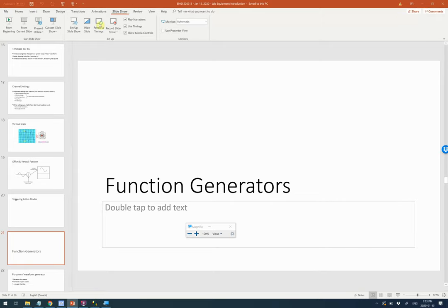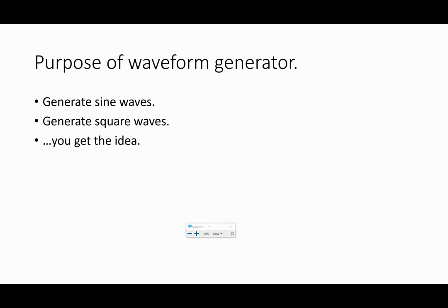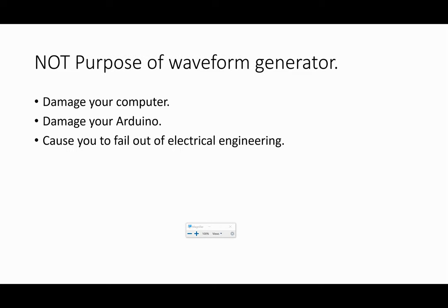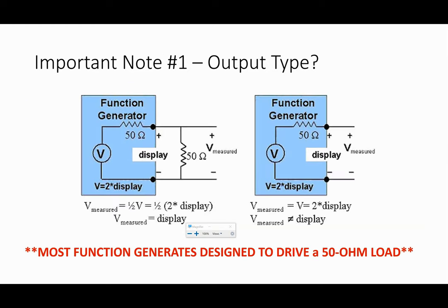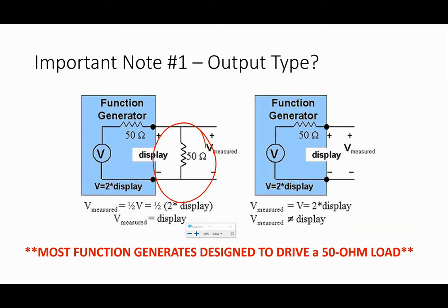Okay, so the last stuff — we won't get to embedded today. Function generators. These are pretty straightforward — generates a sine wave, square wave, whatever. Like oscilloscopes, there's things they shouldn't do. The big one is damaging stuff — we don't want it to damage anything. Most function generators — the number one problem you'll see that will be confusing — is that most function generators are designed to drive a 50 ohm load. This means they're expecting a 50 ohm resistor at the output at the other end of the cable. This is just part of how it's able to generate a signal that has the correct rise and fall times.